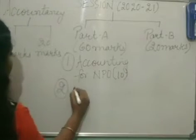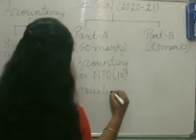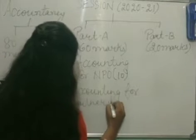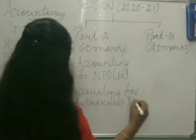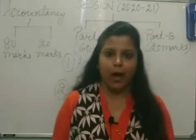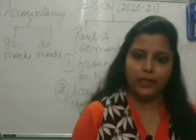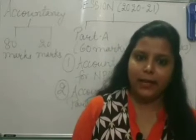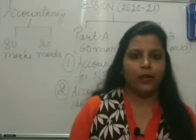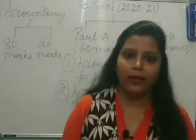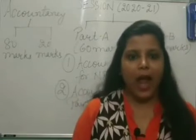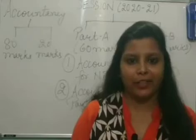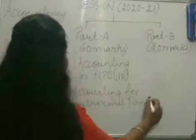The second unit is Accounting for Partnership Firm. In this unit, we will be discussing about how a new partner enters the firm, the fundamentals of partnership, what happens when an existing partner leaves the firm — that is, retirement of a partner — what happens when there is a death of a partner, and what happens when the firm comes to an end, that is, dissolution of partnership firm. This unit consists of 30 marks.